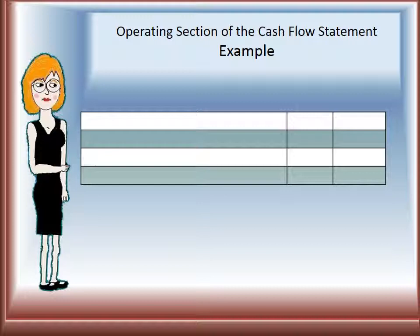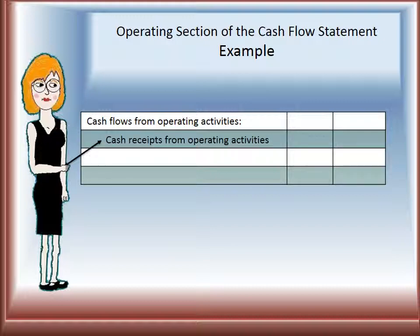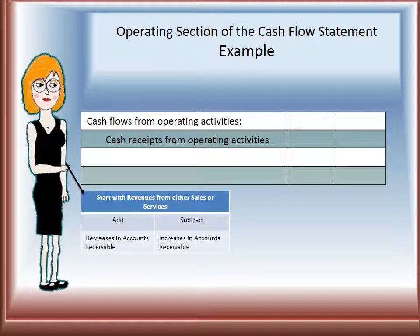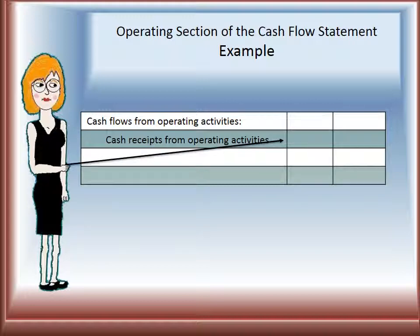Let's start with our example for the operating section. We will start with the cash flow from operating activities header, and then we will add cash receipts from operating activities. To arrive at this amount, we will start with revenues from either sales or service, and add decreases in accounts receivable or subtract increases in accounts receivable, which in this case will give us $50,000, which is in the left-hand column because we are subtotaling.